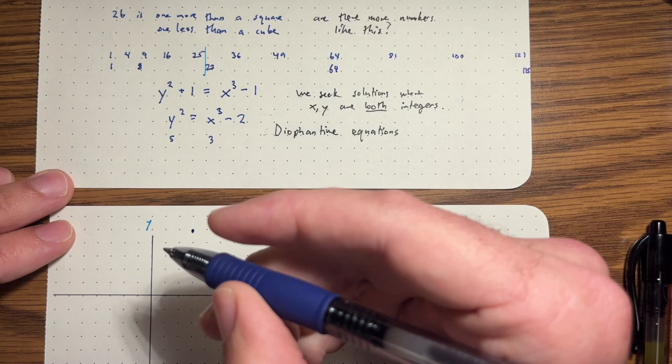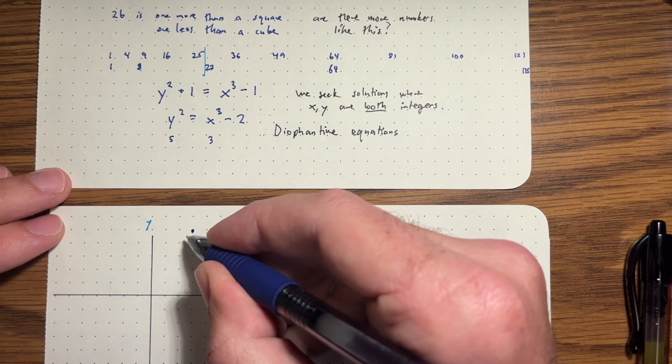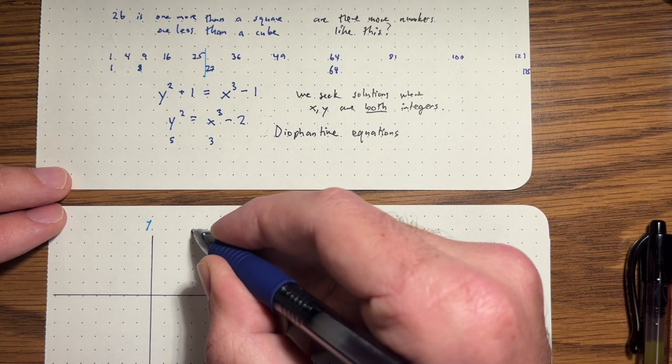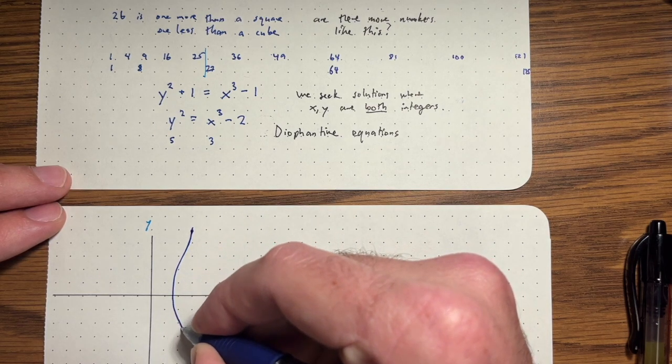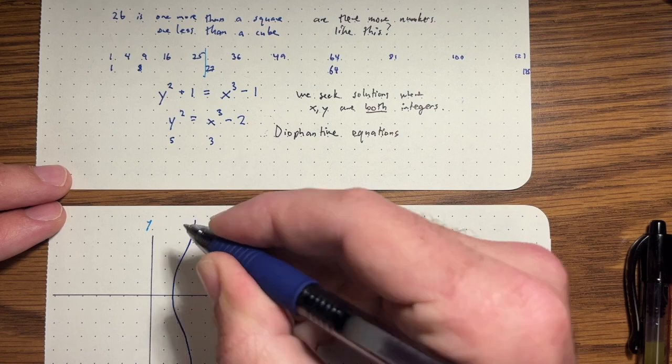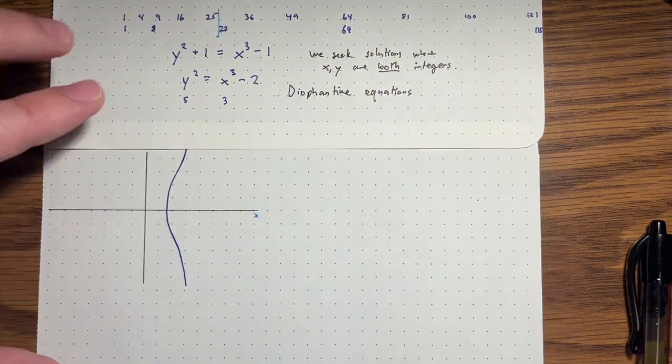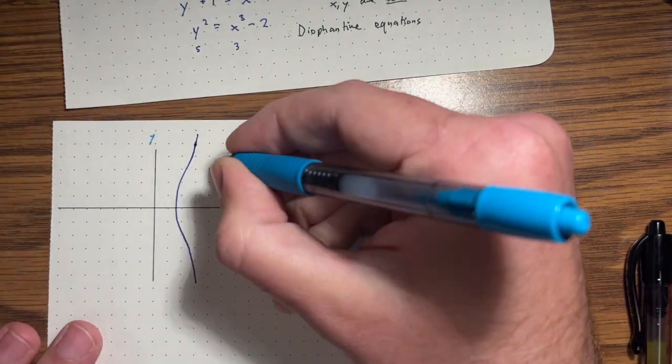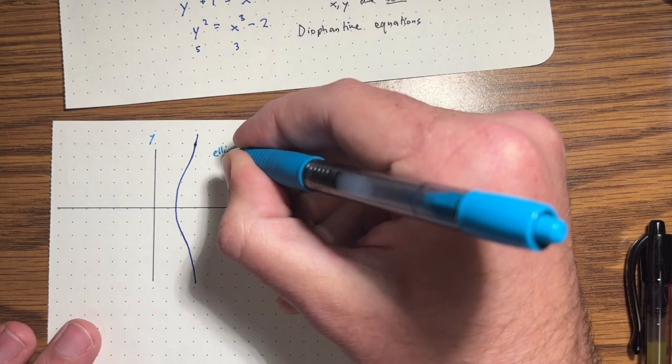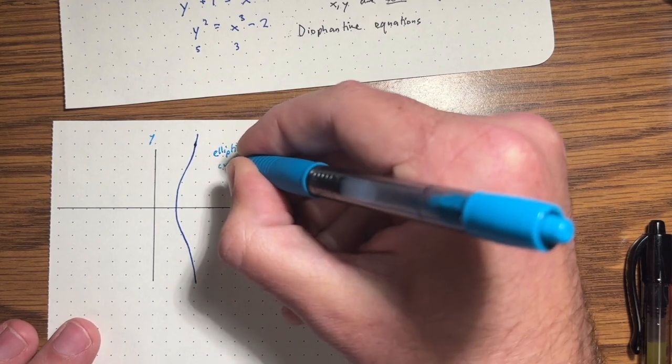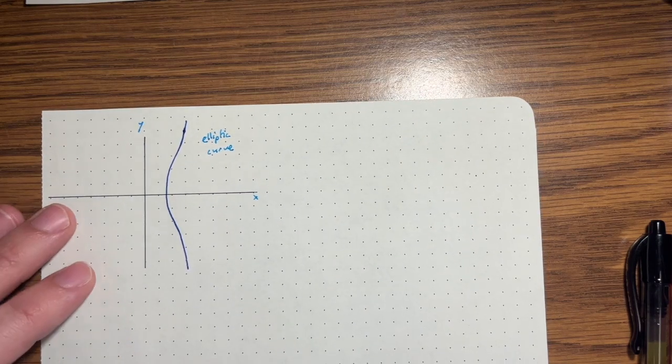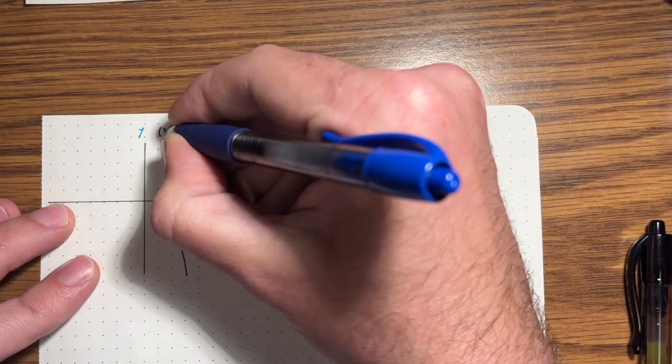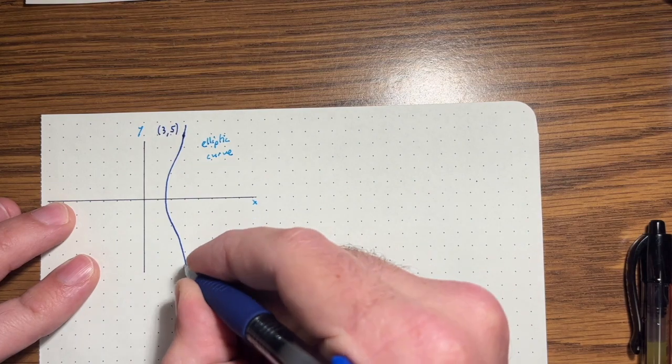And it turns out when you graph this, you're going to get something that kind of looks like this. It's going to keep going off. It turns out that this is actually an example of what's called an elliptic curve. This is an elliptic curve. And we have a point on it with integer coordinates, three comma five.